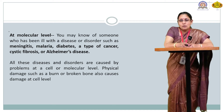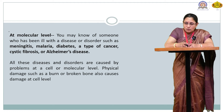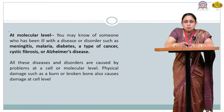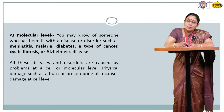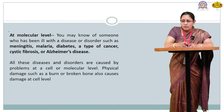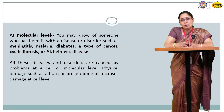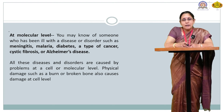At the molecular level, you may know of someone who has been ill with diseases or disorders such as meningitis, malaria, diabetes, types of cancers, cystic fibrosis, or Alzheimer's disease. All these diseases and disorders are caused by problems related to the cell at the molecular level — at the nuclear level — where your genetic material (DNA, RNA) or any subcellular organelle such as mitochondria or ribosome is disturbed, due to foreign material or genetic disorder.